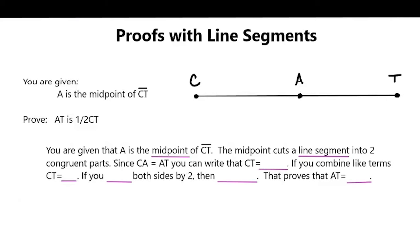Well, since CA is equal to AT, you can write that CT equals AT plus AT because you substituted CA for AT. If you combine like terms, CT is equal to, well, what do you get if you combine AT plus AT?